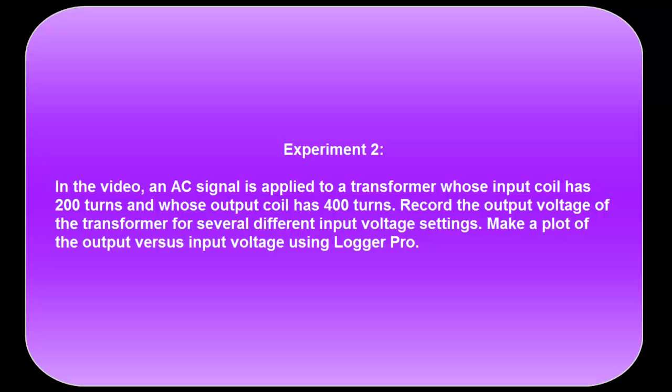In Experiment 2, the AC signal is now applied to a transformer whose primary coil has 200 turns and its output coil, the secondary coil, has 400 turns. Do the same thing as in the first experiment. Record your input and output voltages and plot your results on LoggerPro. You can put this graph on the same graph as your first graph.